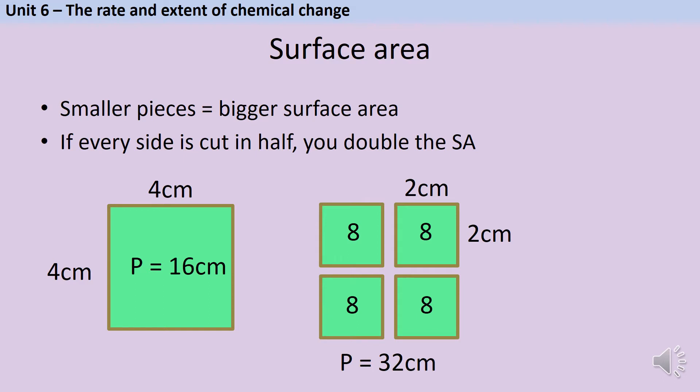The third factor that we can manipulate to influence rate of reaction is surface area. Imagine the squares here represent pieces of magnesium that have been placed in acid. The acid can only react with the edges of each magnesium square. The atoms on the inside of the square are protected by the other magnesium atoms around them. The acid can't get to them. By cutting the big square into four smaller squares I open up the centre of the magnesium. The acid particles can collide with it more frequently.